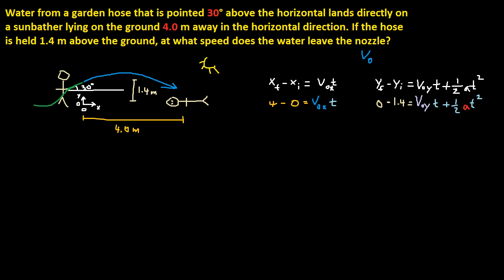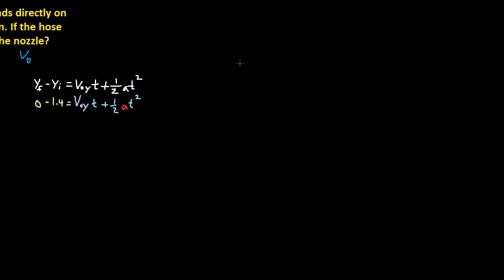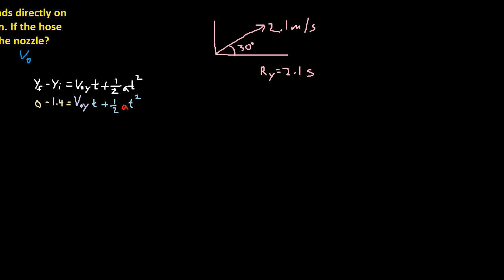Before we go into components, how do we calculate components? If we have a vector at 30 degrees with magnitude 2.1 meters per second, the Y component would be 2.1 times sine of 30, and the X component would be 2.1 times cosine of 30.